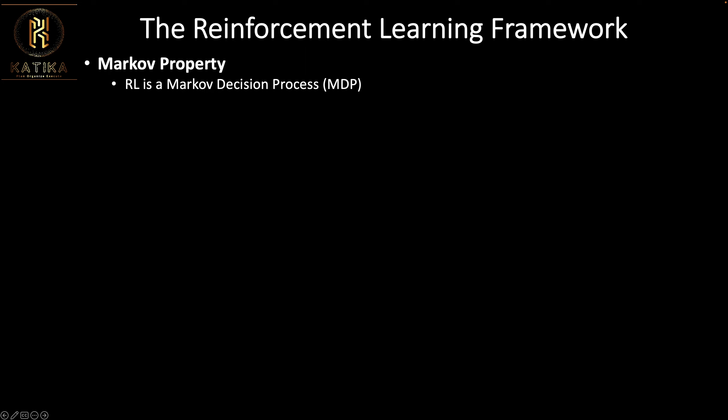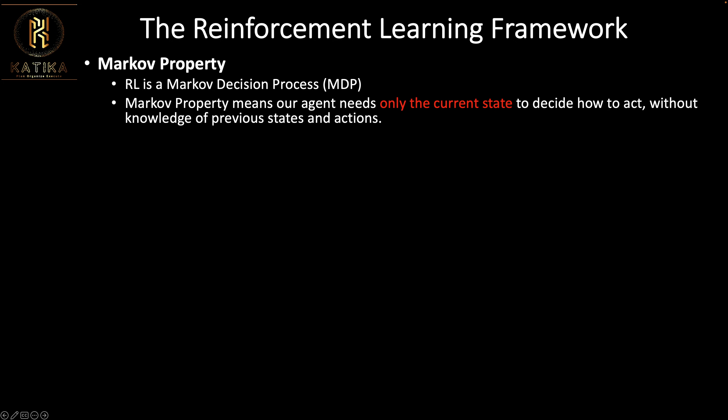A Markov decision process simply means that we make a decision based on our current state, and not based on any past or future information. For example, in day trading, if I want to buy a stock today I'll make a decision based on the information I have about that stock today.